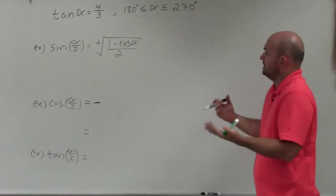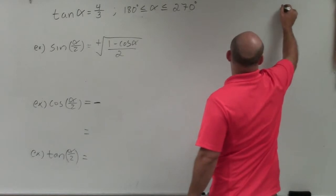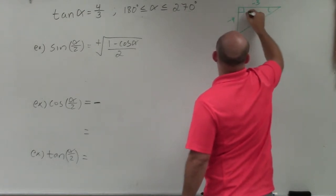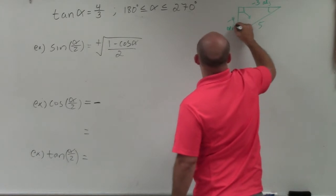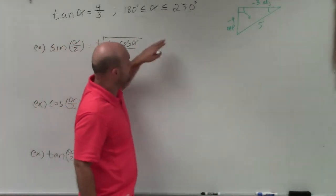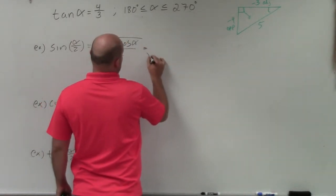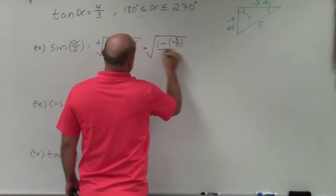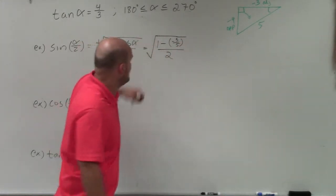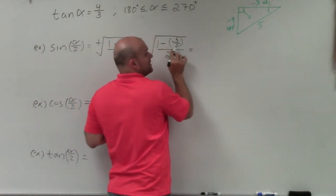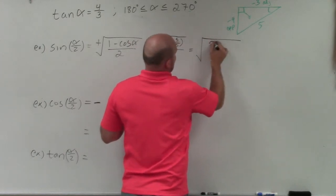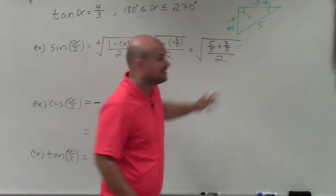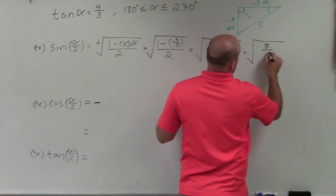Now we evaluate. We have a triangle with hypotenuse 5, opposite side negative 4, and adjacent side negative 3. Cosine is adjacent over hypotenuse, so cosine of alpha is negative 3 over 5. Plugging in: the square root of 1 minus negative 3 over 5, divided by 2. Combining numerators with the same denominator: 5 over 5 plus 3 over 5, divided by 2. That gives 8 over 5 divided by 2.